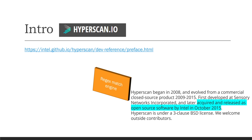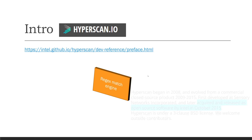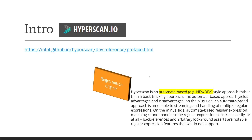We'll look at this regex engine, how it's installed, and the various ways of using it. Hyperscan is an automata-based approach — NFA and DFA, finite deterministic and non-deterministic finite automata — rather than a backtracking approach. A big plus of this NFA/DFA approach is that it's amenable to streaming and handling multiple regular expressions. On the downside, back references and arbitrary look-around assertions are notable regex features not supported by Hyperscan.